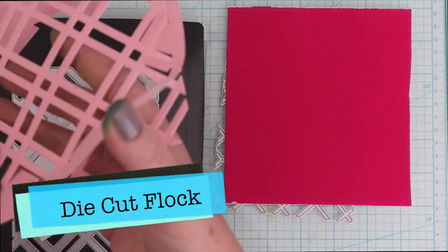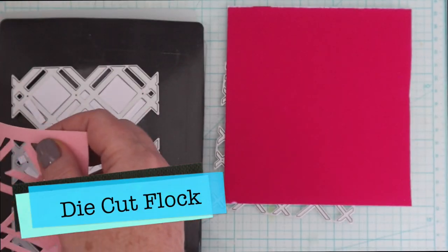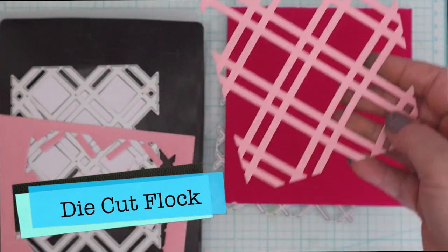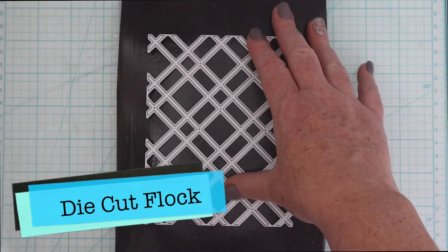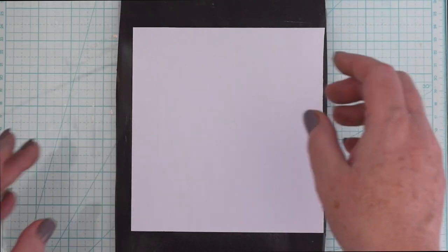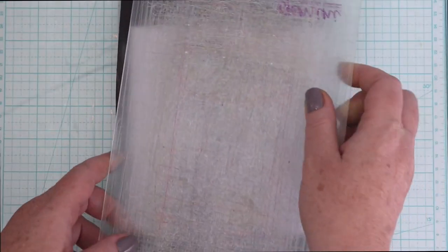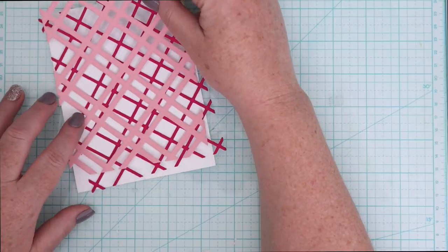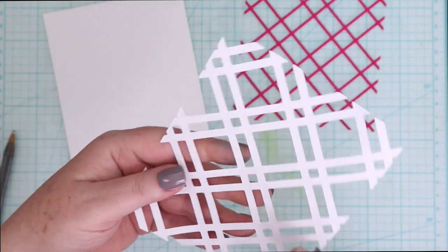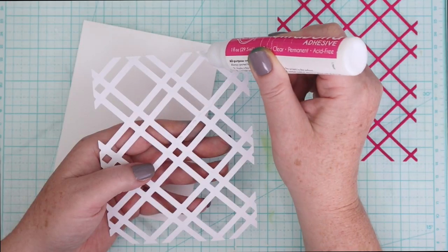Flock Transfer Sheets die cut beautifully. Like I mentioned, not only using a trimmer is easy with the Flock Transfer Sheets, but they also die cut beautifully. So I'm using the Concord and 9th Plaid Card Front Dies. There are two different types of plaid. There's a thin and a thick. So I cut each of them out of two different colors of Flock Transfer Sheets.